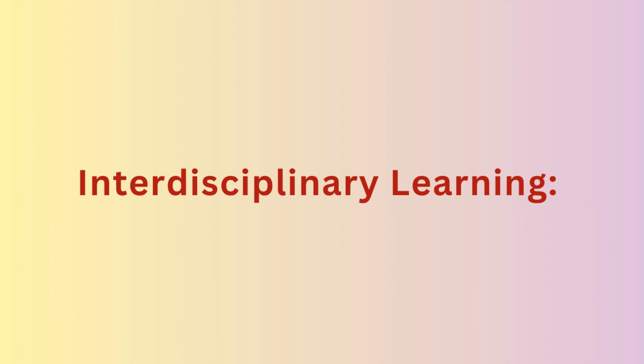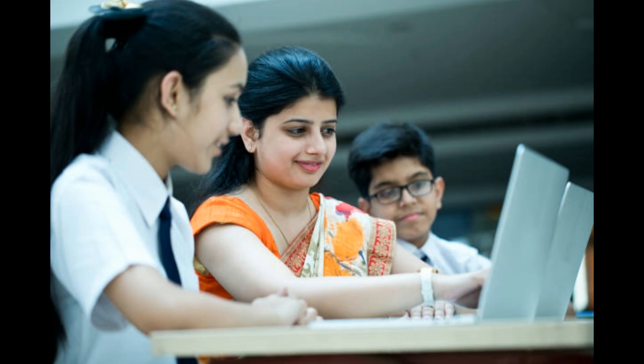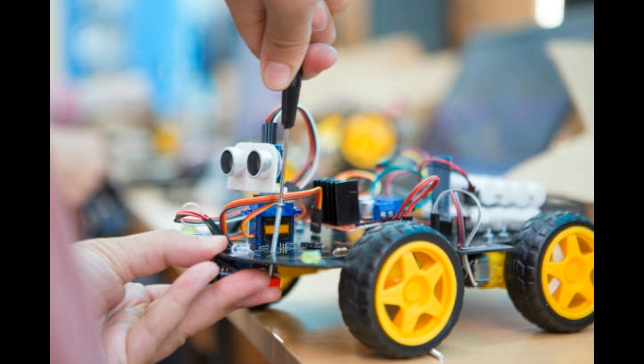2. Learn Different Things Together: In STEM education, we mix different subjects instead of keeping them separate. This helps us see how science, math, and arts are connected. When students work on projects, they use knowledge from different areas to solve problems, just like in the real world where we often need different skills to solve complex challenges.